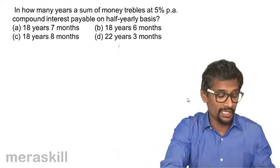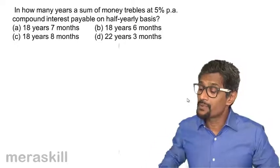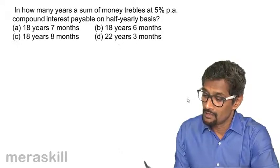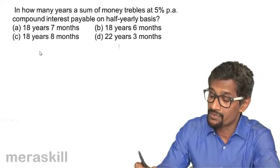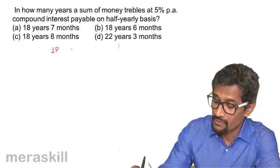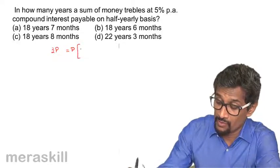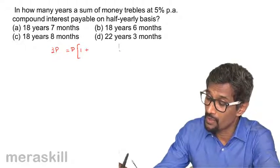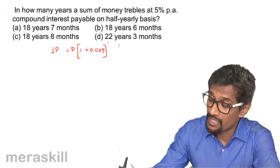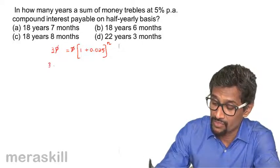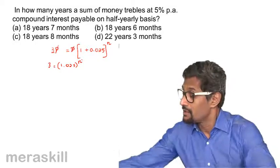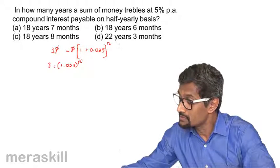In how many years will a sum of money treble at 5% per annum compound interest payable on a half yearly basis? It becomes treble on a half-yearly basis. So amount is 3P equals principal into 1 plus 0.05 compounded half-yearly, which becomes 0.025 raised to N. This gets cancelled, so 3 equals 1.025 raised to N.